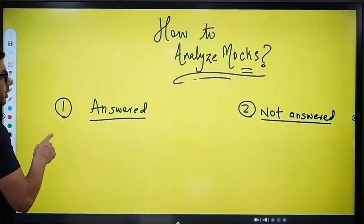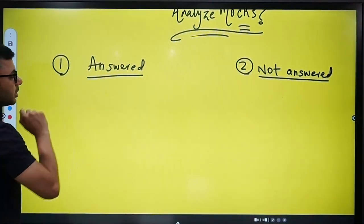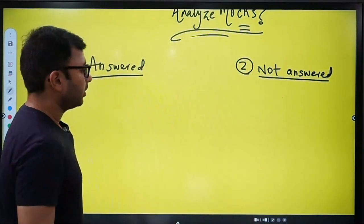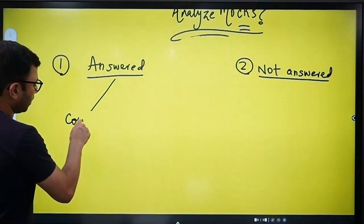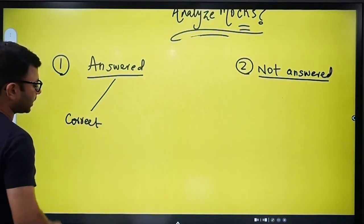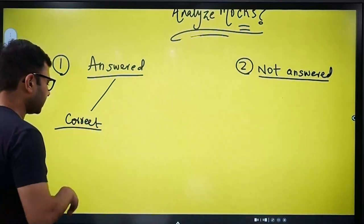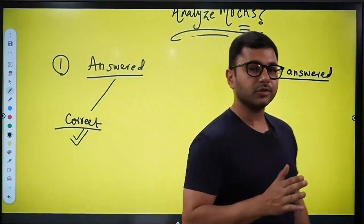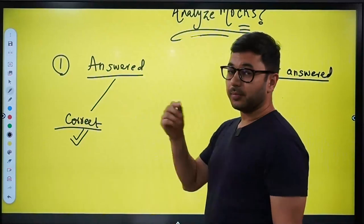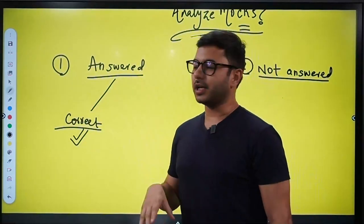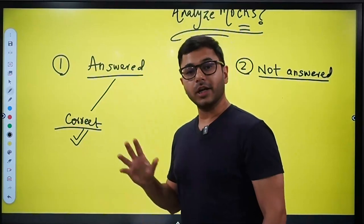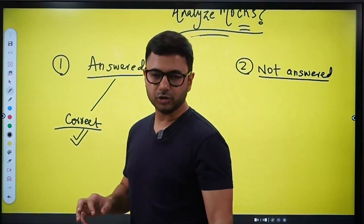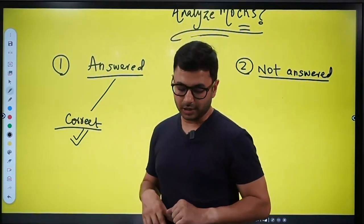Within answered, you will make further sub-categories. And this is going to determine what do you do with the questions that you have attempted. Whatever you have answered, it's either correct. If it is correct, then there is no reason of looking at it again. You give yourself congratulations, very good. You've done it, you've answered it, and you've answered it correctly. Of course, if you answered it correctly but you did not actually know it, if it was a fluke, then you have to think about it. We won't make a category for this, because we are mature enough to understand whether I guessed or I actually knew it.